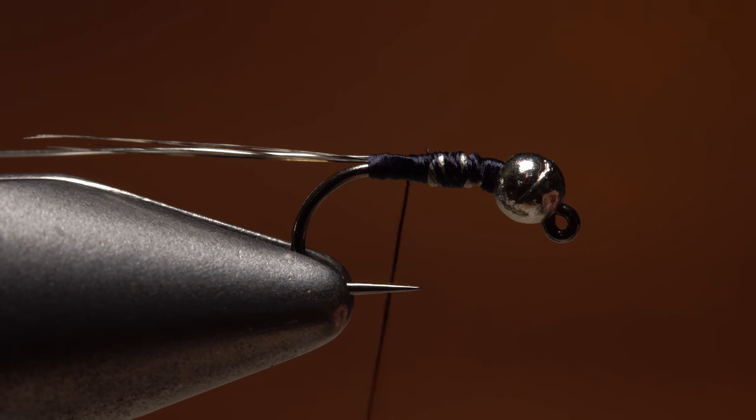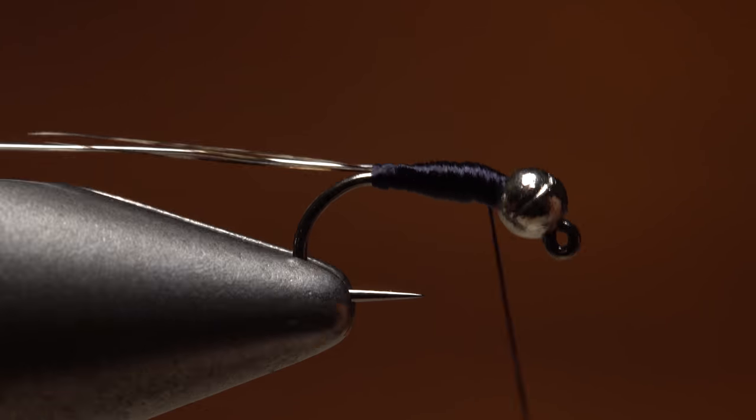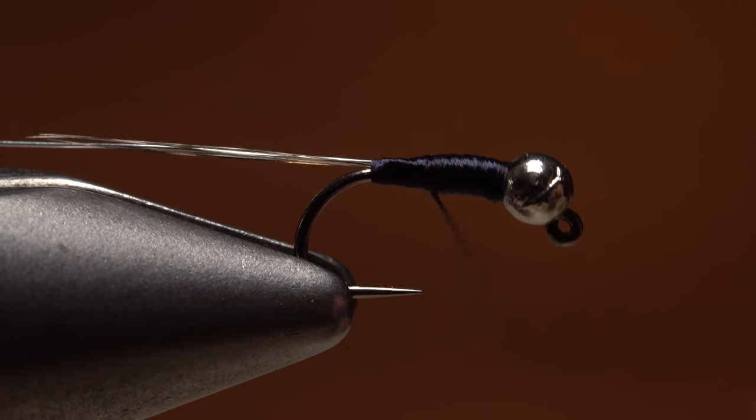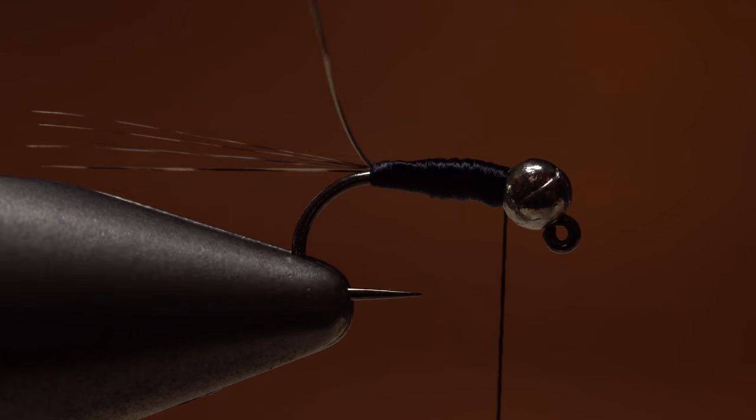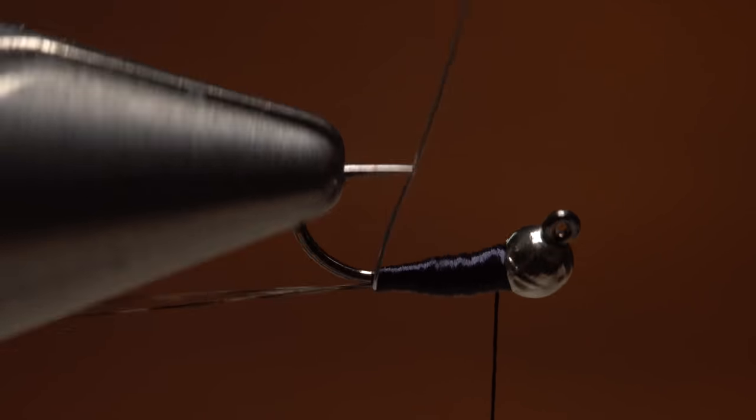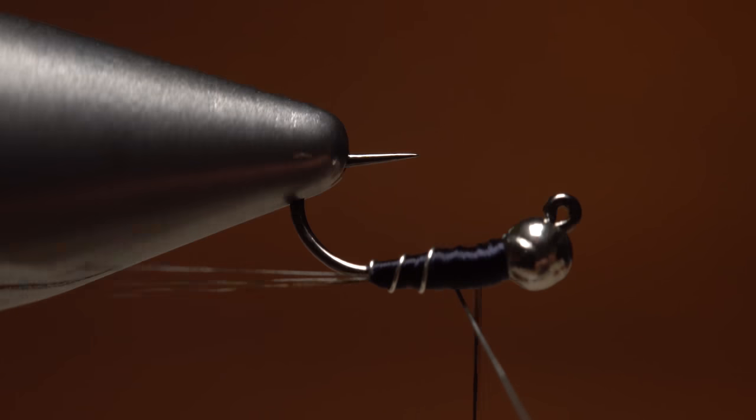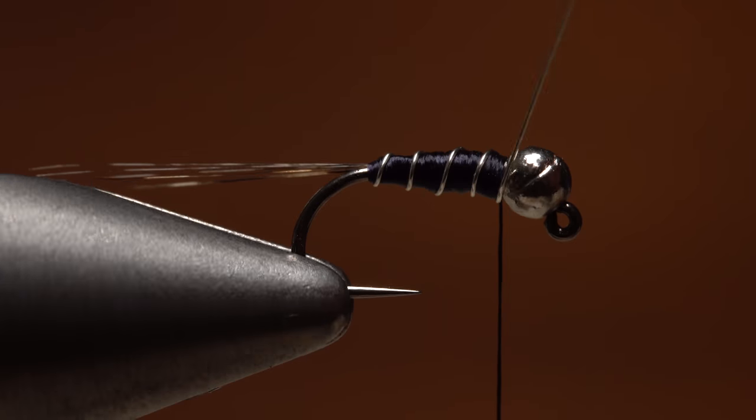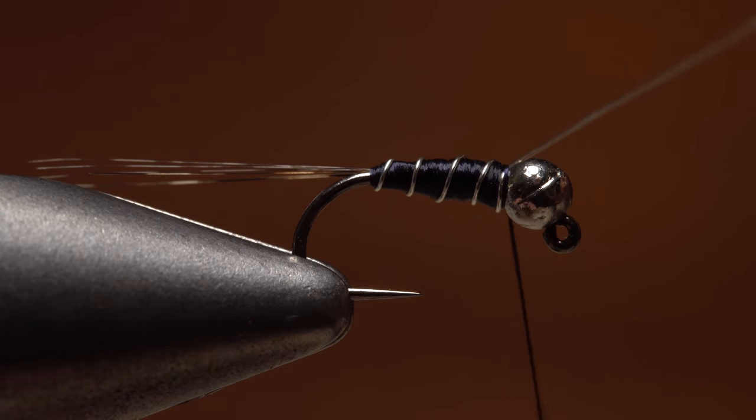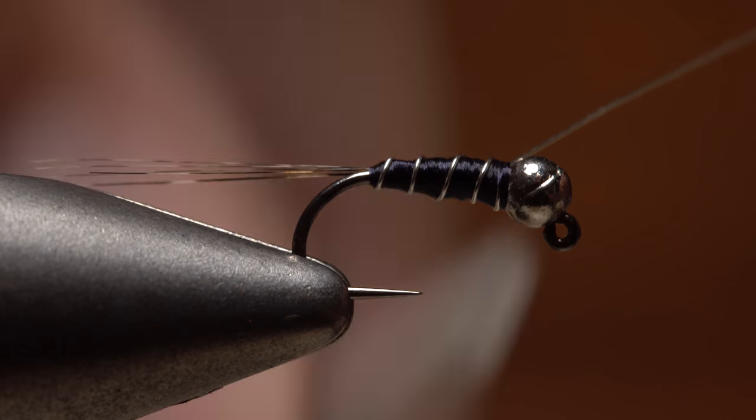You can then use your tying thread to cover up the wire wraps and create a tapered yet slim body on the fly. When you're satisfied with the shape, get hold of the silver wire and take wraps or rotate your vise to rib and segment the fly. Four to five turns usually looks pretty good. Take wraps of tying thread to secure the wire right up against the back of the bead.